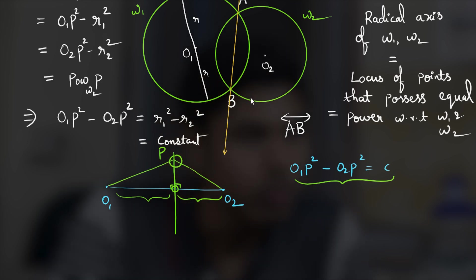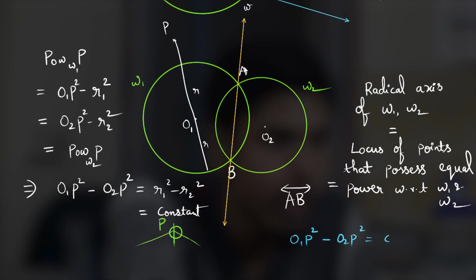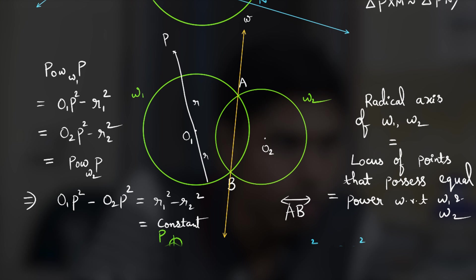So thus we conclude that it is a line perpendicular to the line O1O2 and hence this will be perpendicular and also it's a line.